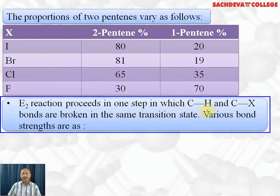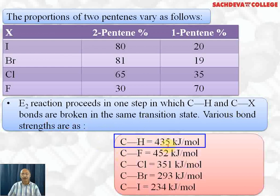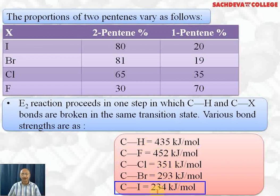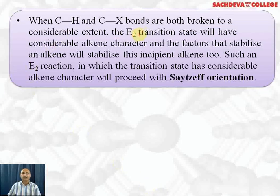E2 reaction proceeds in one step in which the C–H bond and the C–X bond are broken in the same transition state. Bond dissociation energies are: C–H = 435 kJ/mol, C–F = 452 kJ/mol, C–Cl = 351 kJ/mol, C–Br = 293 kJ/mol, and C–I = 234 kJ/mol. When both C–H and C–X bonds are broken to a considerable extent, the E2 transition state has considerable alkene character, and factors that stabilize an alkene (maximum alkyl groups) will determine the major product. Such E2 reactions proceed by Zaitsev orientation.